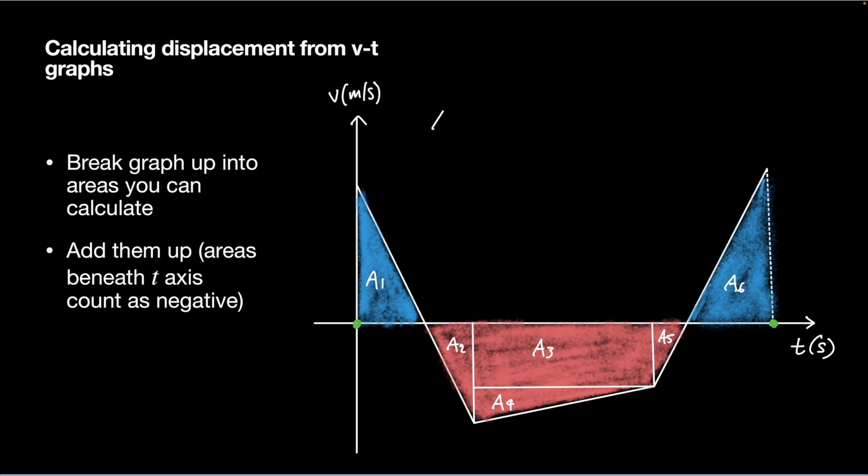That's basically going to be five triangle calculations and a rectangle. My overall displacement would just be the blue ones as positive and the red ones as negative. So a1 minus a2 minus a3 minus a4 minus a5 plus a6. That will give me the displacement between my starting and finishing times.